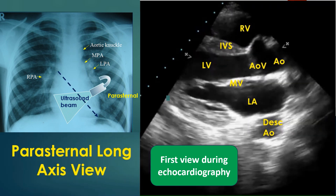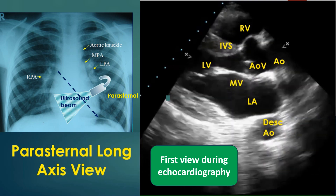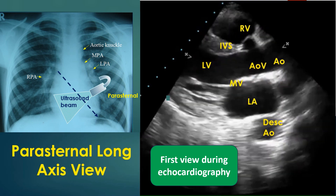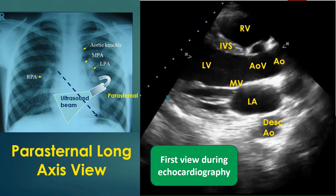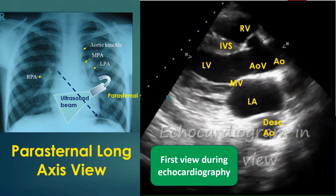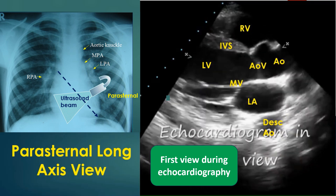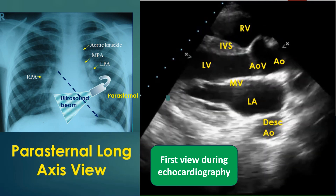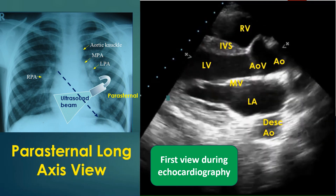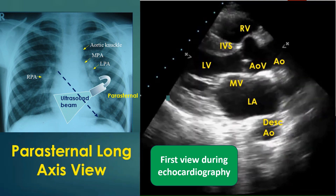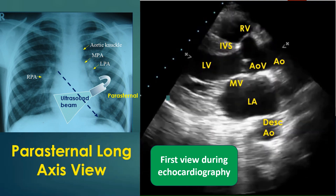Aortic root and valve, left ventricle, left atrium, mitral valve, chordae tendineae, papillary muscles and interventricular septum, as well as part of the right ventricle, are imaged in this view.